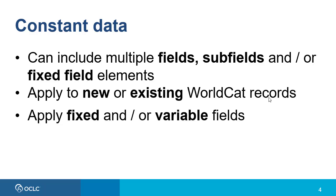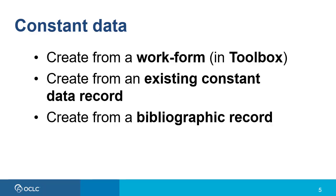When you need to insert more than just a single field or a phrase, you might use constant data. Constant data can include multiple fields, subfields, and/or fixed field elements, and you can apply constant data to new or existing WorldCat records. You can also apply fixed and/or variable fields from a constant data record.